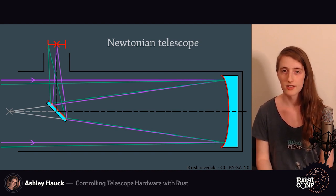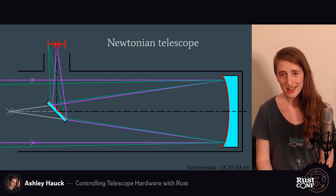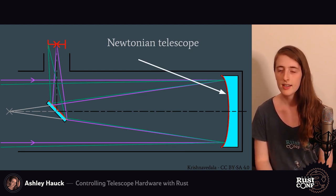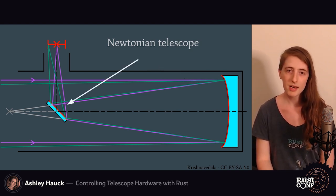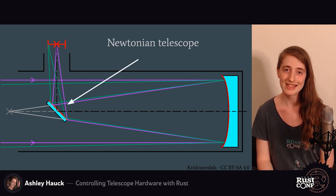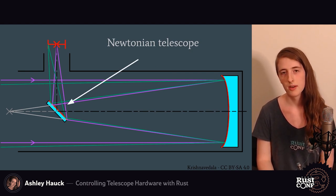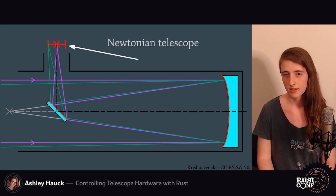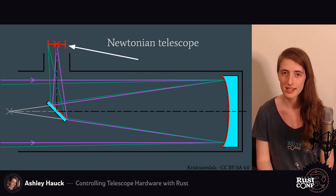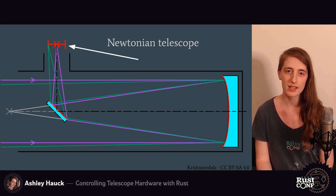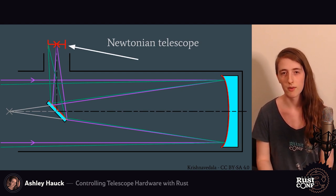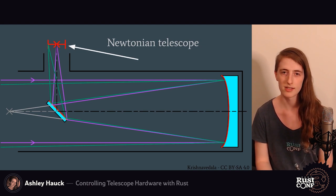This is a Newtonian telescope, which is what I have. Light comes in from the left, bounces off a parabolic mirror on the right, then a secondary mirror in the middle redirects the light up top. Normally if you were looking through this with your own eyes you'd have a lens, but instead we have an image sensor that sits directly on the focal point and collects the data directly, and then we pull the data off this camera.